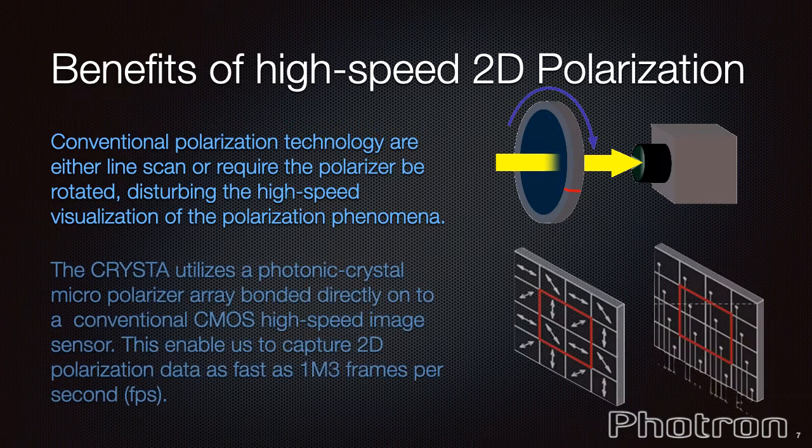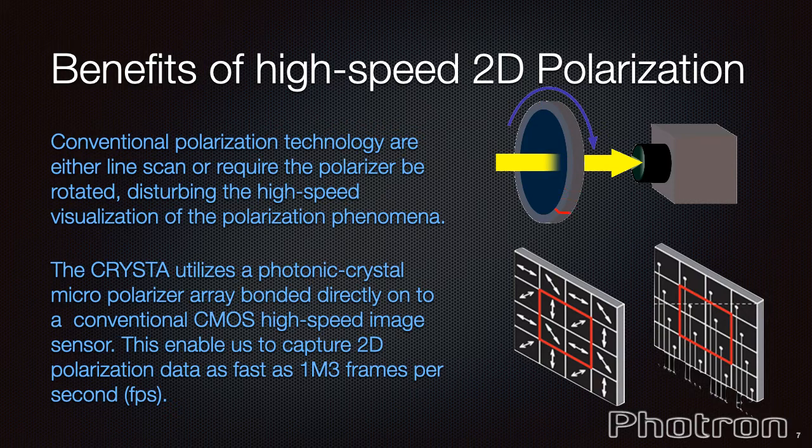But by bonding the photonic crystal polarizer array directly to a high-speed sensor with our pixels offset by 45 degrees from their immediate neighbors in classes of four, we can simultaneously expose all pixels and record high-speed 2D polarization data at framing rates of hundreds, thousands or even millions of frames per second and with very short shutter times if required.